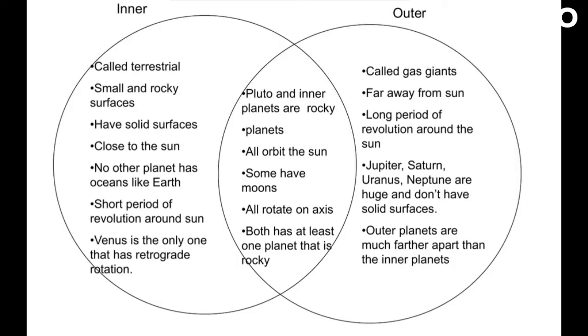Another key difference between the inner and outer planets is their formation. The inner planets formed from the solid material left over after the Sun was formed, while the outer planets formed from the gas and ice that remained.